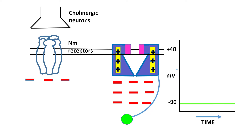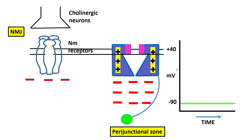Let us now extend this diagram and take a look at the neuromuscular junction — with the cholinergic neuron and the Nm receptor, the nicotinic receptors. The voltage-sensitive sodium channel is not exactly at the neuromuscular junction; it is in the perijunctional zone. When this cholinergic neuron gets stimulated, it releases two molecules of acetylcholine, which changes the conformation of the Nm receptor. A cationic channel opens up and allows positive ions — mostly sodium but also calcium and other cations — to enter the cell from the exterior. It is a non-specific cationic channel.